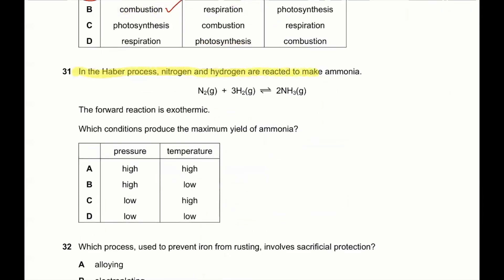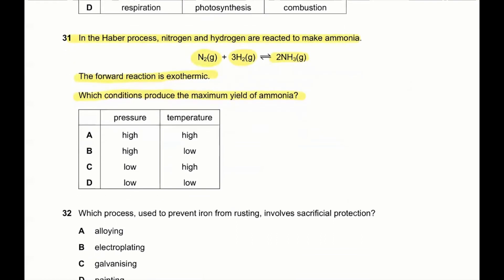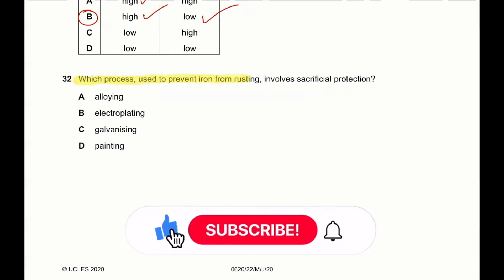Question 31: in the Haber process, nitrogen and hydrogen are reacted to make ammonia. The forward reaction is exothermic. To produce the maximum yield of ammonia: on the left-hand side there are four moles of reactant and on the right-hand side two moles of product, so pressure must be high. Temperature must be low because high temperature would reverse the exothermic forward reaction. So B is the correct answer.